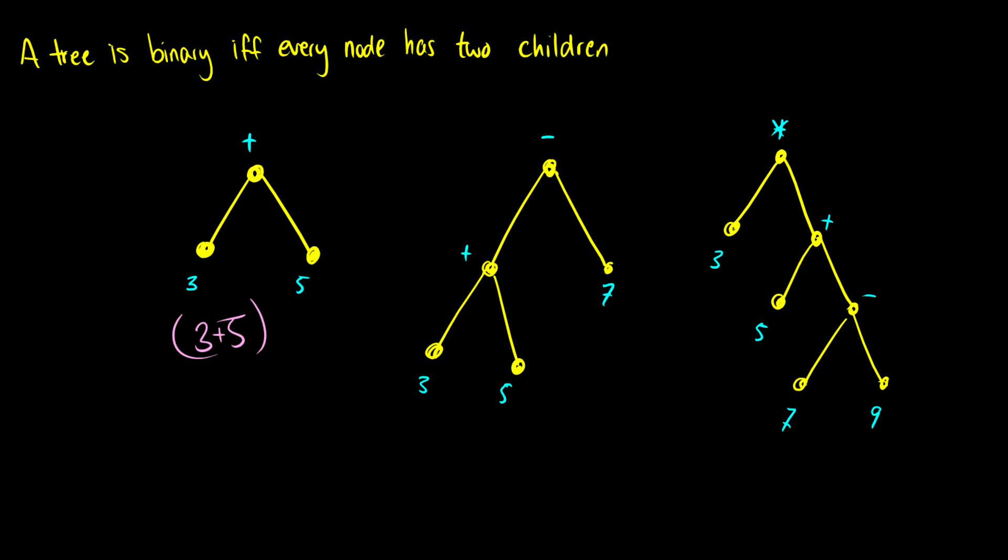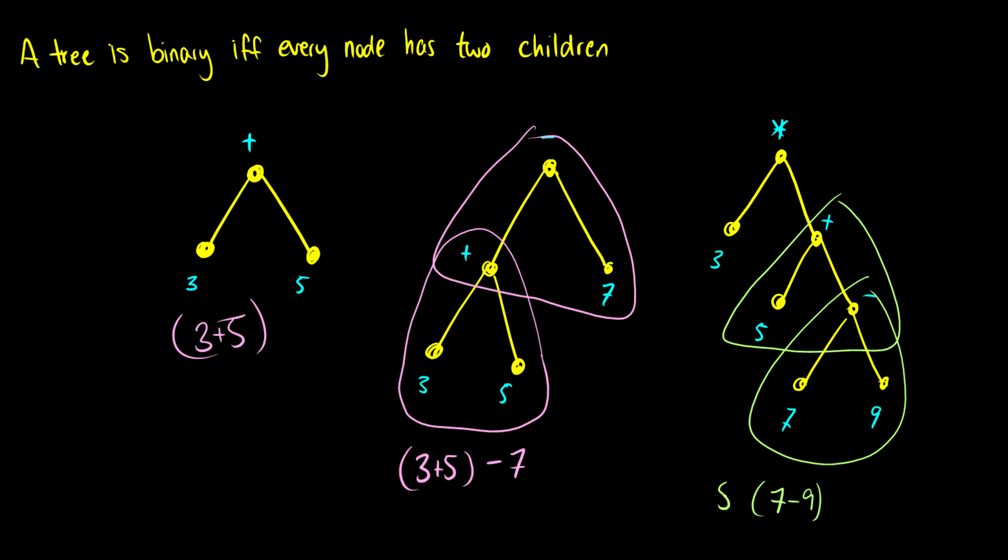What about this other tree here, where we have a minus sign with children plus and 7, and the plus sign has children 3 and 5? We just build up the tree. We have this expression which is 3 plus 5, then we take our minus sign and do minus 7. What about the right one? We look at the lowest children, we have 7 minus 9, and we have 5 plus 7 minus 9, and then we have 3 times 5 plus 7 minus 9. So those are binary expressions in trees.